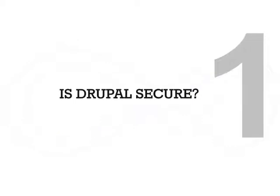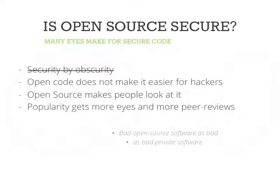While I was preparing these slides, I asked myself: is Drupal secure? To answer that, you first need to answer the question: is open source secure? Because people used to believe in security by obscurity, which means that if a hacker can't view the code, it's harder for him to find a bug. But open source makes people look at code — it forces reviews. The more people look at your code, the more people will post reviews and critical bugs. So bad open source software is as bad as bad private software, just with the difference that people will report issues when they come along.